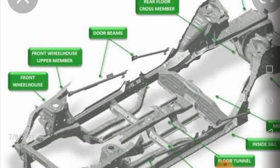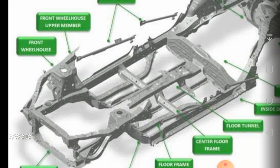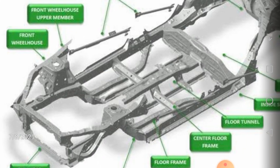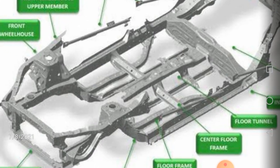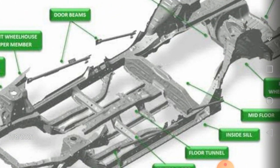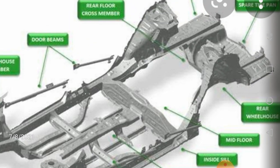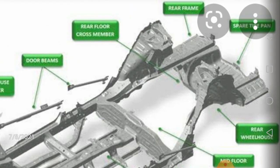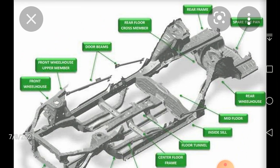The front wheel house is where the front wheel is located, and similar elements exist on the back side for the rear wheel. This is how the frame of a basic automobile looks. Now we will see the main purpose and importance of the frame as far as a vehicle or automobile is concerned.